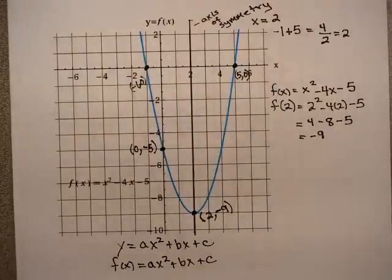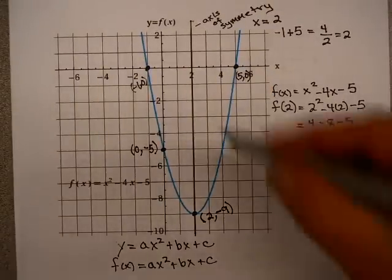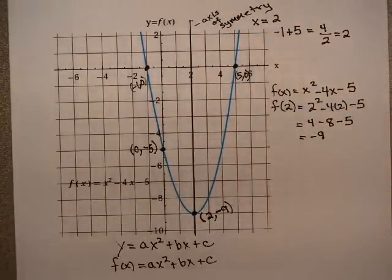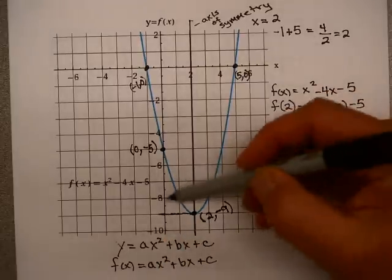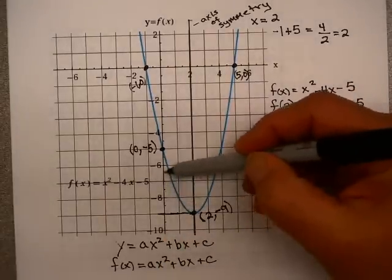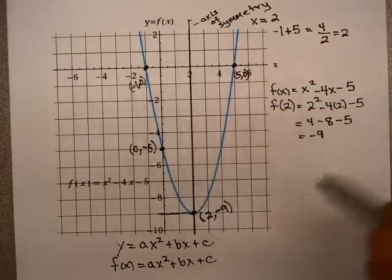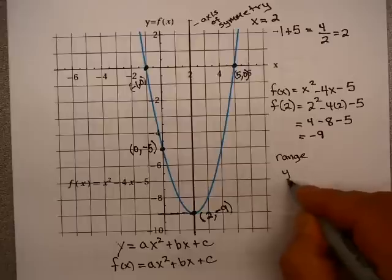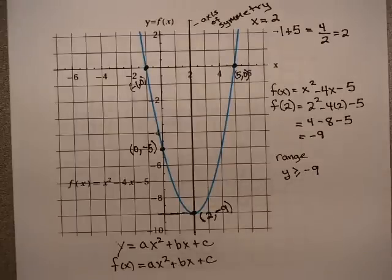Now what about the range? The range is the set of output values. In other words, it's the set of the values of y that are actually used on the graph. Since this is the smallest value, right here at negative 9, we can see that the values of y are y is larger than or equal to negative 9. So I could say the range is y is greater than or equal to negative 9.